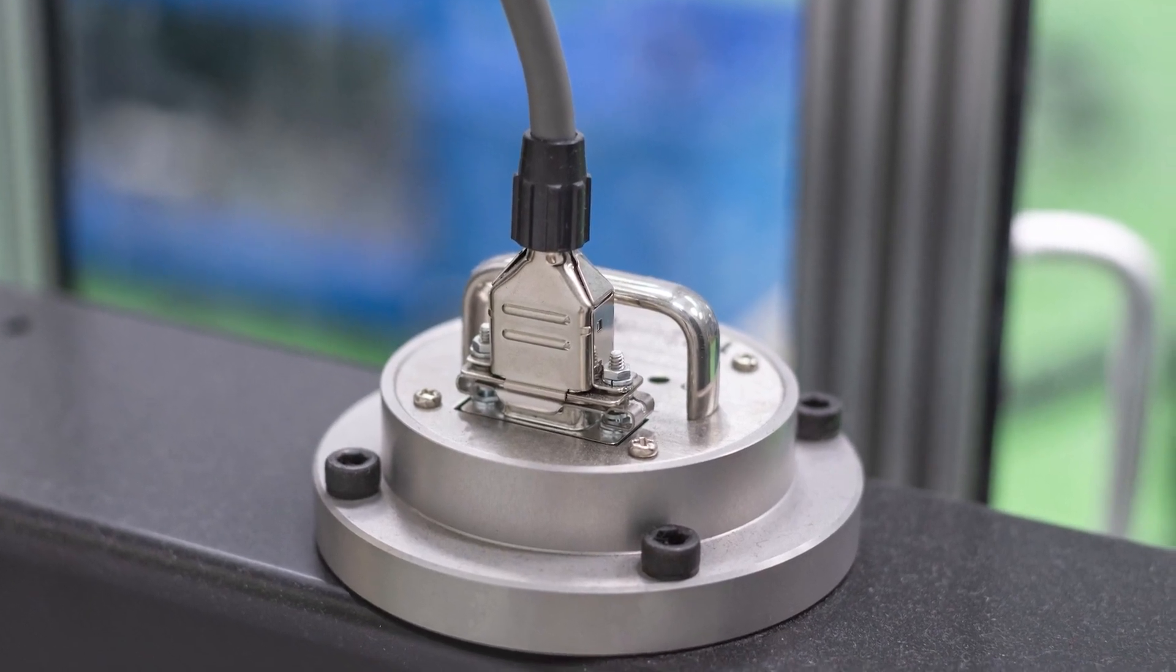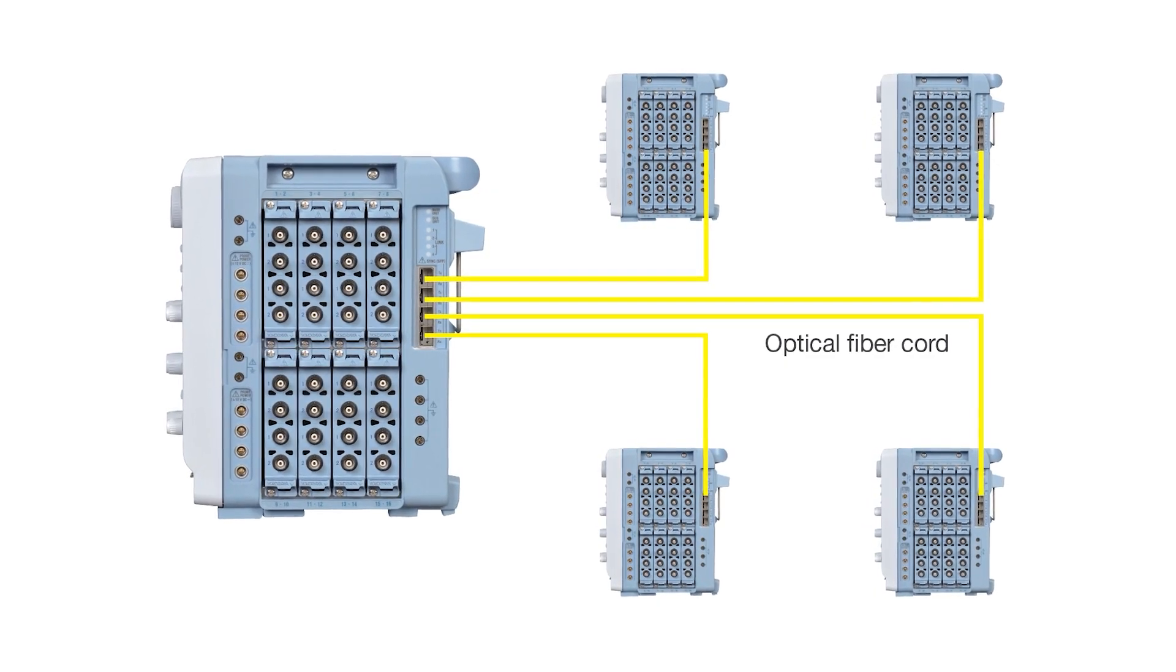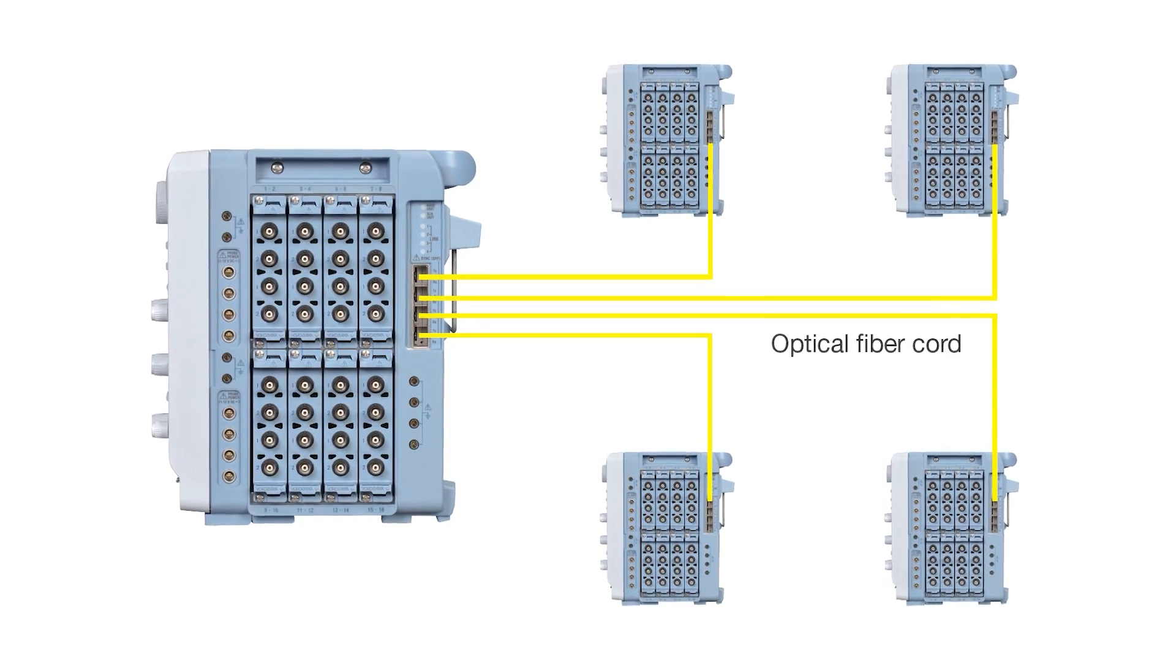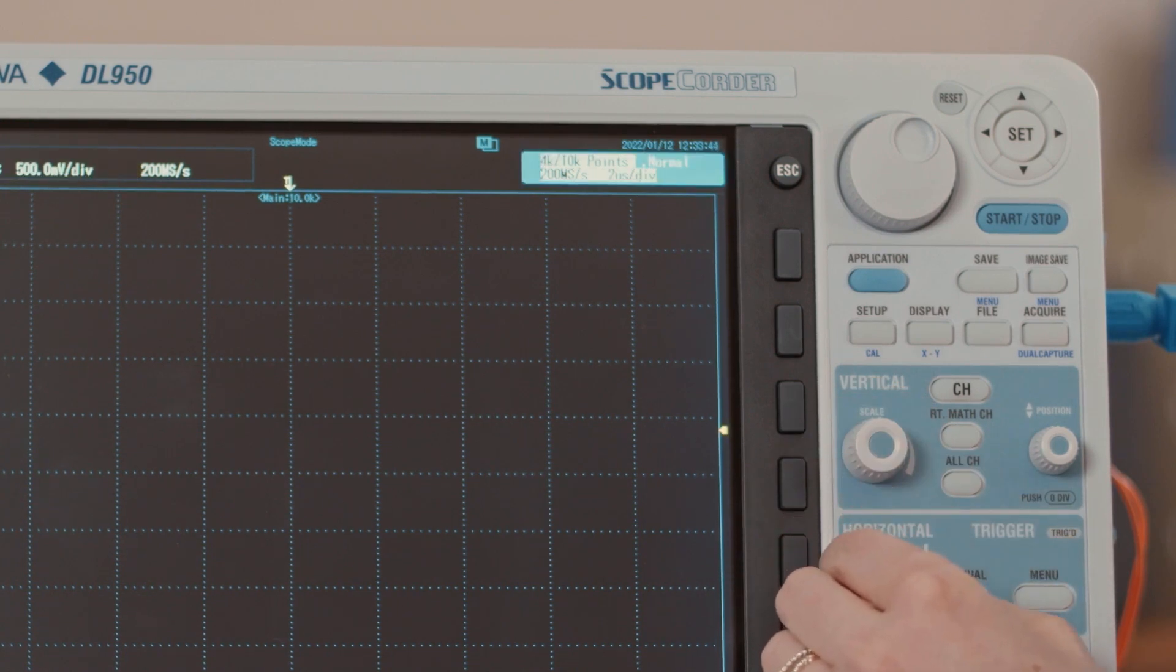The multi-unit synchronization option for the DL950 allows you to time synchronize up to five DL950s for a total of up to 160 channels. All time-based settings are synchronized with the main unit including time per division, record length, and the trigger settings.